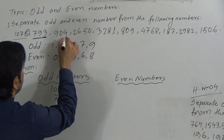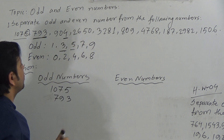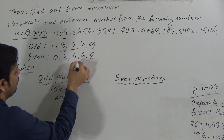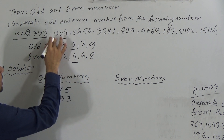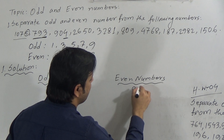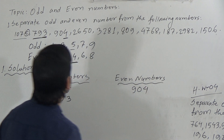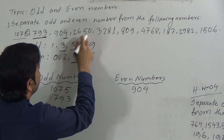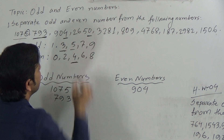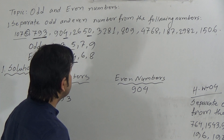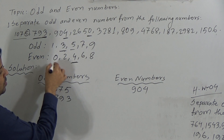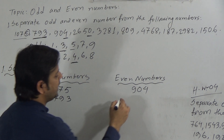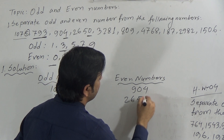The next number is 904. Here 4 is the unit place, and 4 is even, so 904 is an even number. The next number is 2650. Here 0 is in the unit place, and 0 is even, so 2650 is an even number.